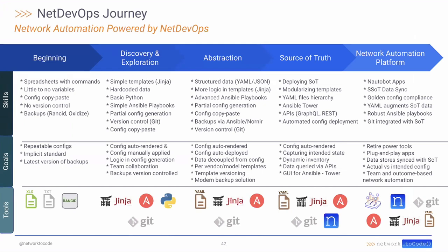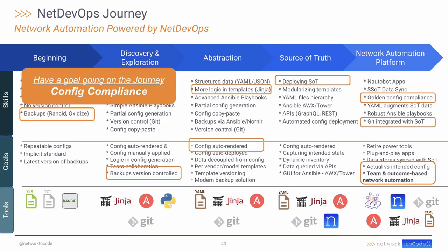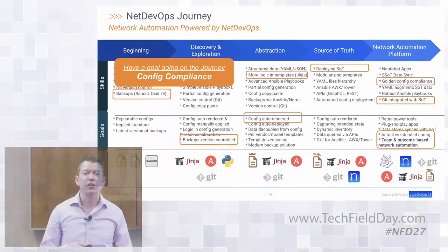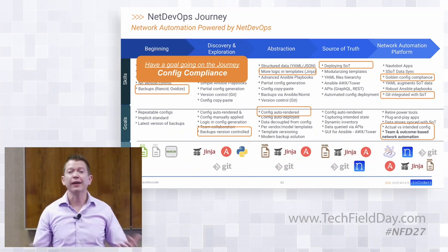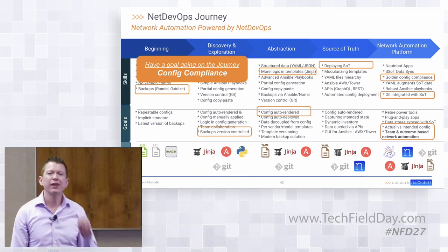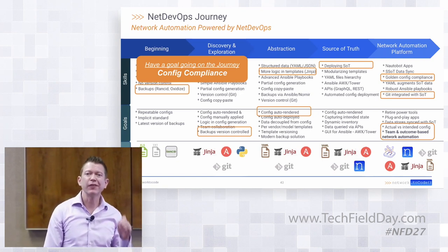As we think about the journey through this NetDevOps transition, a lot of us are new to DevOps on the networking side, and there's a lot to achieve. When you look at the screen, there's a whole lot of information starting at the very beginning and moving all the way to having a network automation platform — requiring skills, goals, and tools. It can be very overwhelming, and particularly with automation, one of the first thoughts is we need to automate all the things, which feels impossible. So let's break it down to something achievable and give you a specific, finite place to begin.